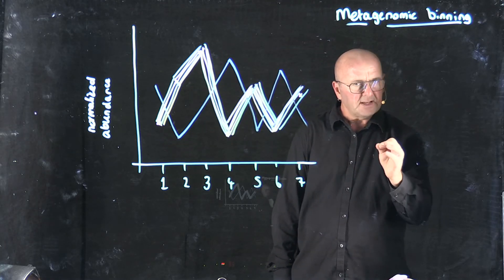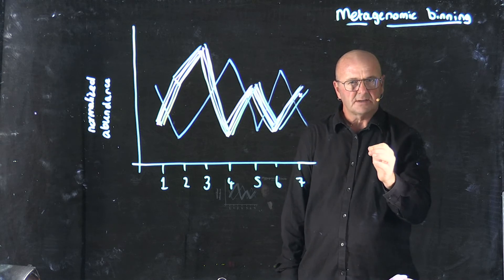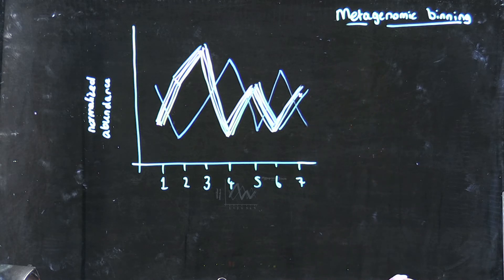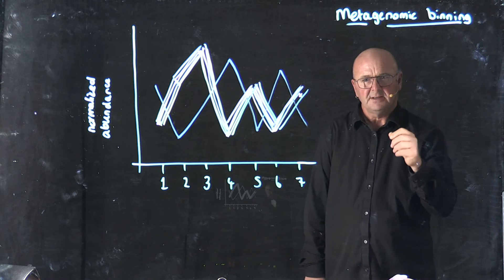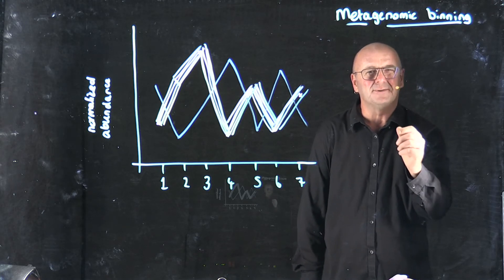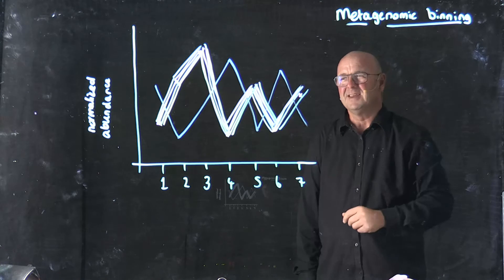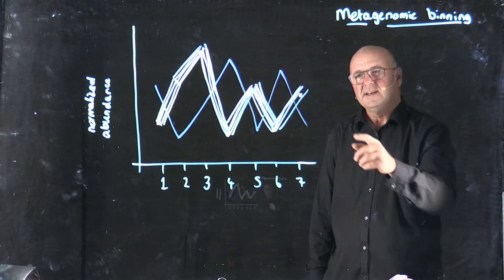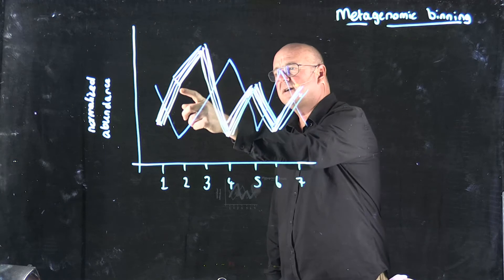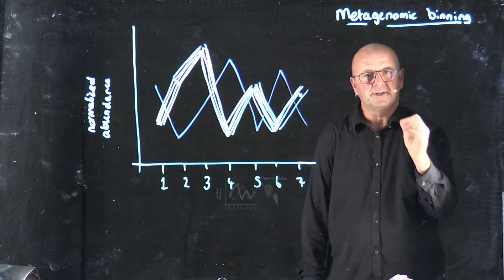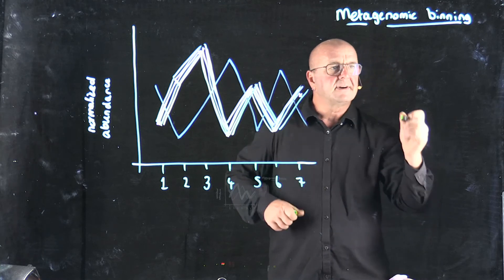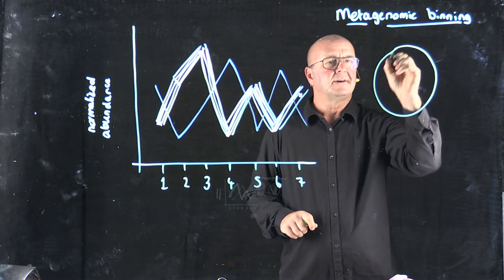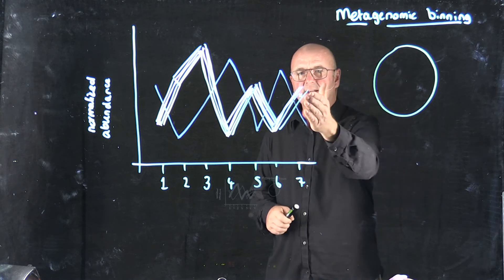Now, there's several explanations for this. Can you think of any? So the simplest explanation, and remember, the simplest explanation is always, almost always the right one. The simplest explanation is that all of these contigs are coming from the same genome, the same organism. And, in fact, what they represent is here's the genome of a particular bacteria, say this bacteria here,